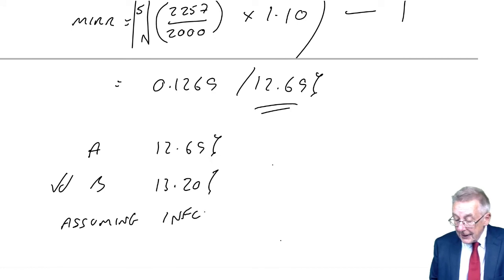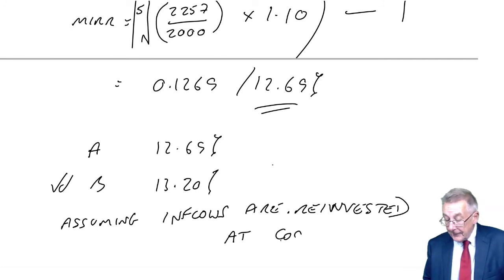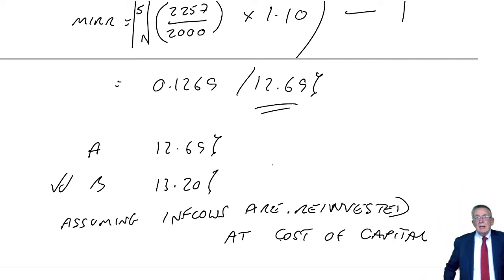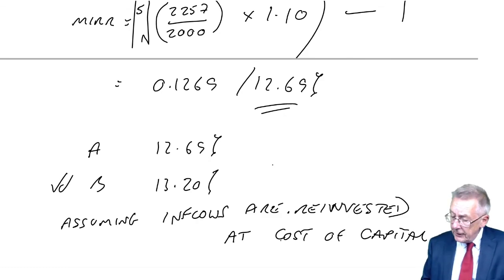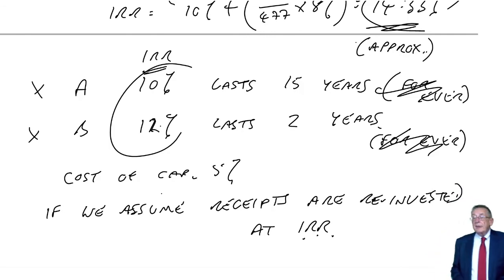And this one has calculated it assuming that inflows are reinvested in both cases at the cost of capital, which you could argue is more logical. I said you could only compare if you know receipts from A could be reinvested at IRR 10%, receipts from B at IRR 12%. That's really rather unlikely. It's two different projects, why should you always be able to invest at 12% or always be able to invest at 10%?